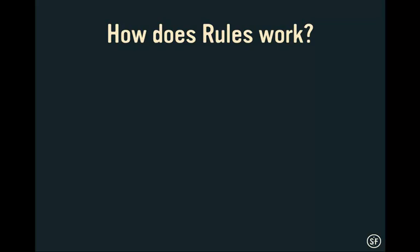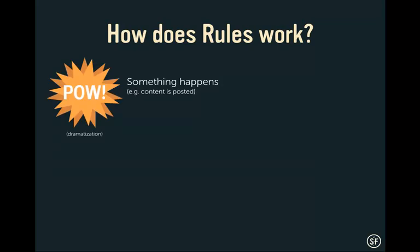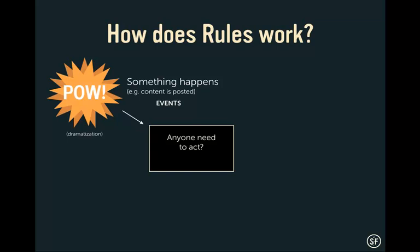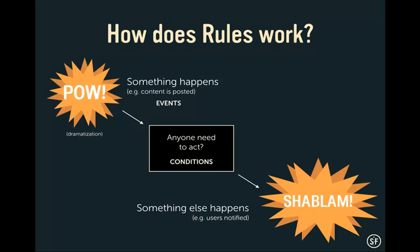How does Rules actually work? If you're familiar with hooks in Drupal as a developer, it's kind of like an easier way with a nice user interface to do a lot of the same stuff. We start out with an event — something happens. This could be almost anything that has a hook in Drupal. A simple example: content was posted, a comment was posted, somebody bought something. Then Rules checks conditions — does anyone want to act on something? And then, an action happens. Every rule has these three parts: event, conditions, actions.